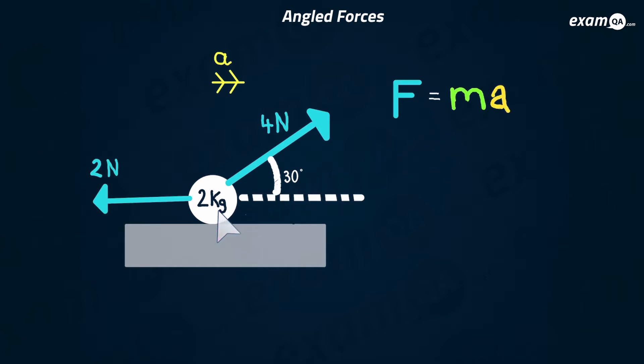Here we've got a particle with two forces acting on it, however one is at an angle — it's not perfectly horizontal nor perfectly vertical. There is also a reaction force and a weight force vertically, but in this question I'm just concerned with the horizontal acceleration, so I'm going to ignore the reaction and the weight as they have no effect horizontally.